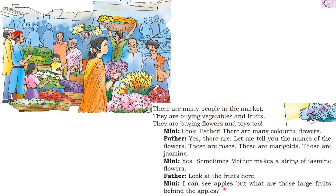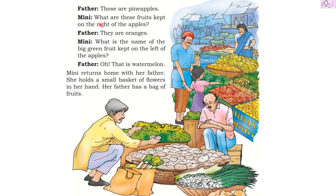Mini says, 'I can see apples, but what are those large fruits behind the apples?' Mini's father tells her they are pineapples. Mini asks, 'What are these fruits kept on the right of the apples?' Father says, 'They are oranges.' Mini then asks, 'What is the name of the big green fruit kept on the left of the apple?' Father answers, 'That is watermelon!'